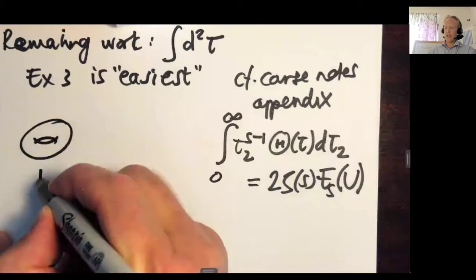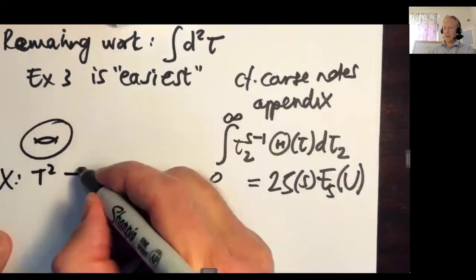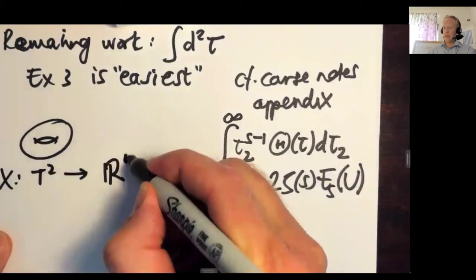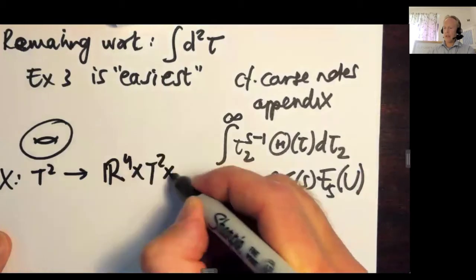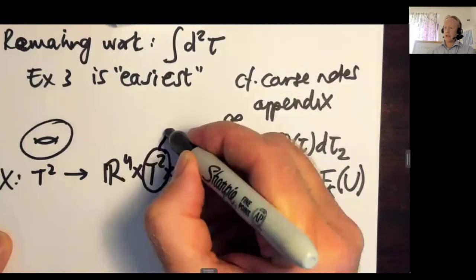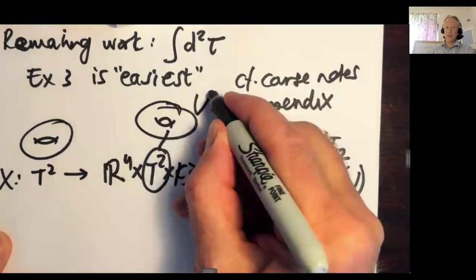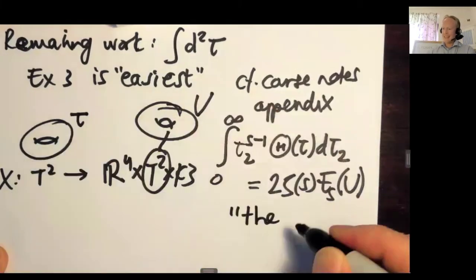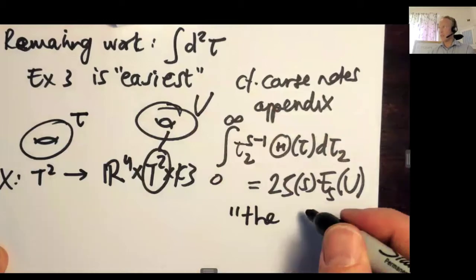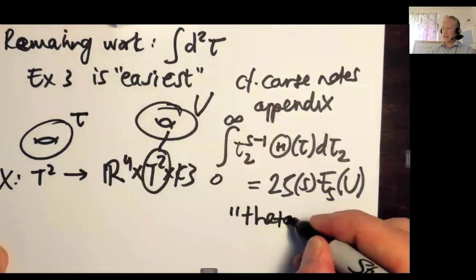Where I remind you that u was the space-time complex structure. Remember that we can have torus on the world sheet, but x is a map into space-time. And if we had this R4 times T2 times K3, then this is another torus. And this torus now has complex structure u. And this torus has complex structure little tau.